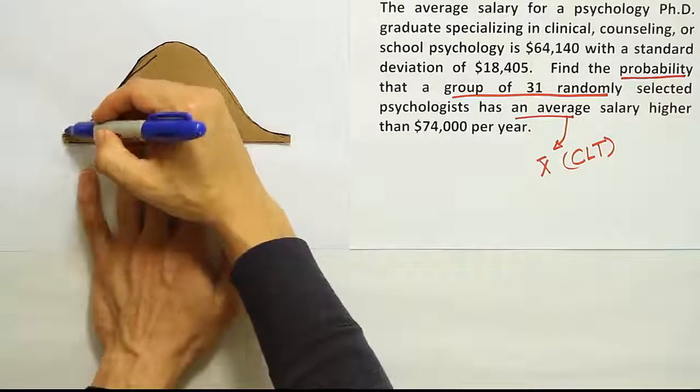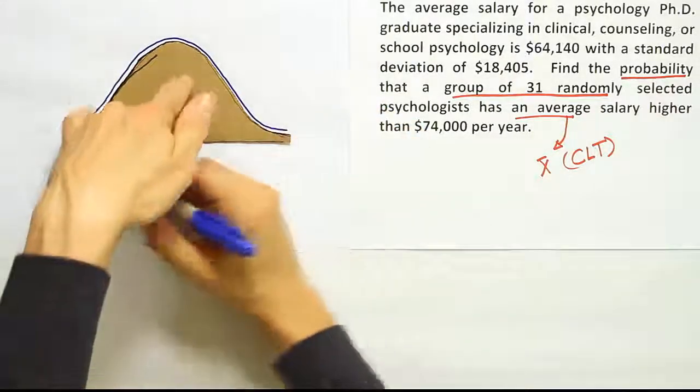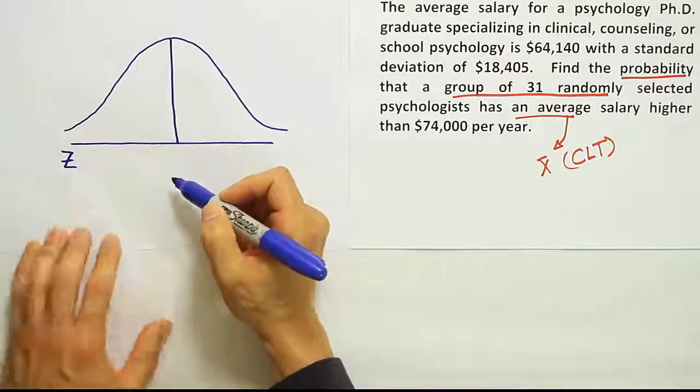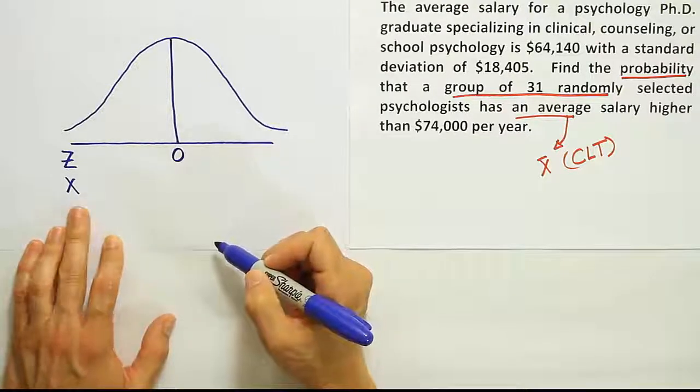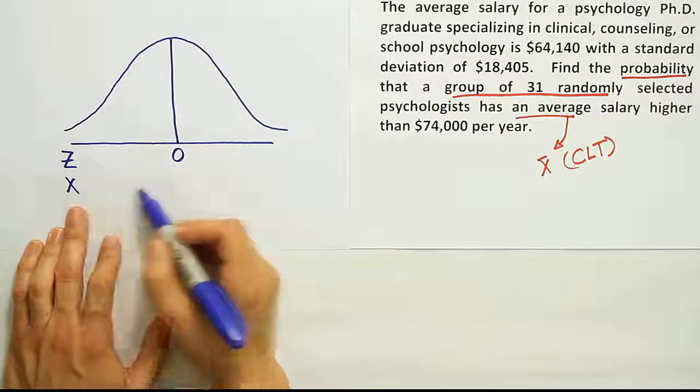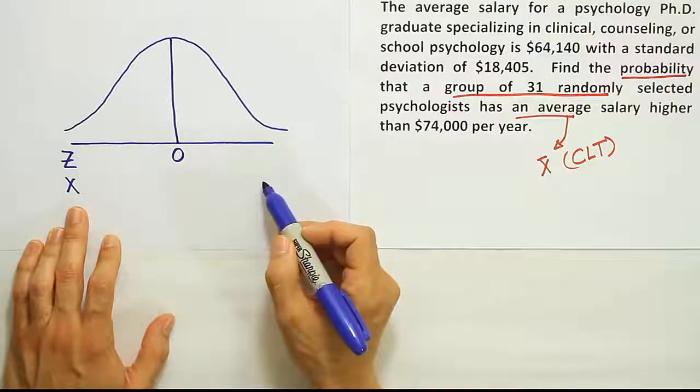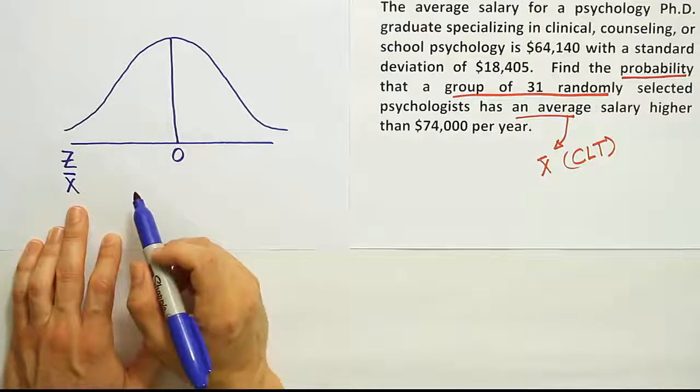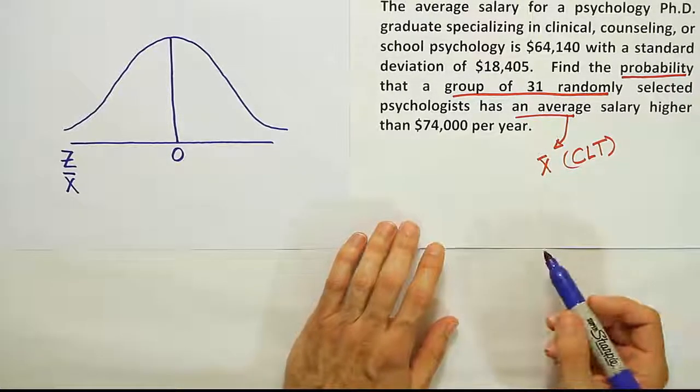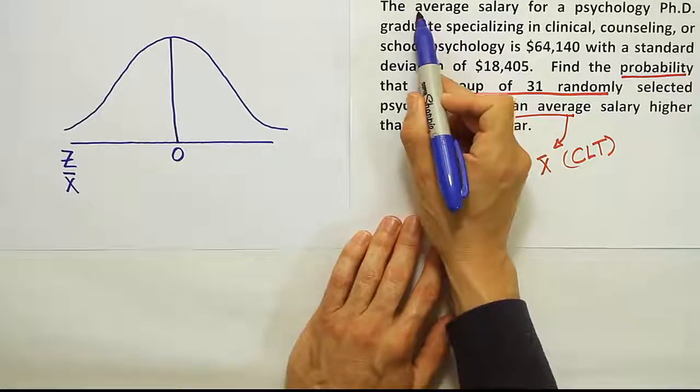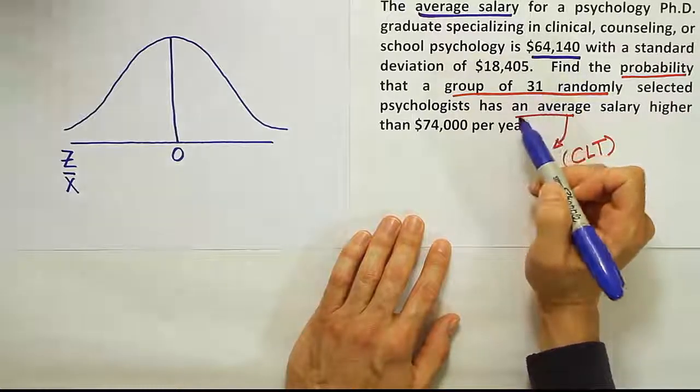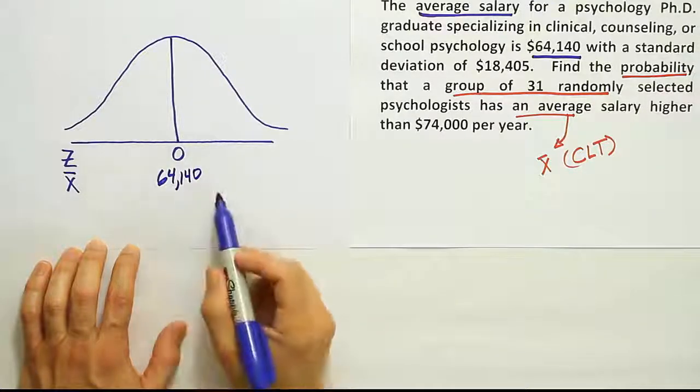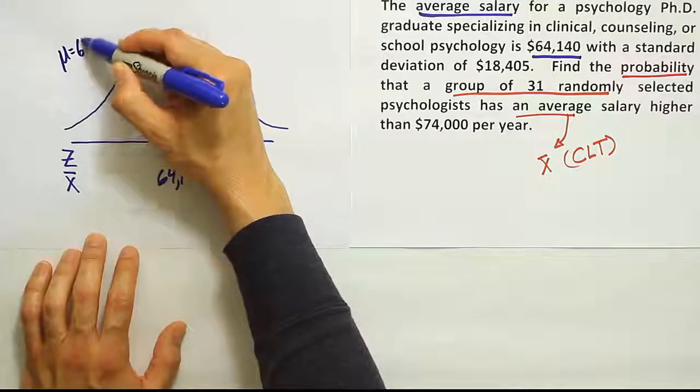So let's go ahead and use that then. I'll put my little bell curve tool up here, draw the bell curve. And let's go ahead and label the information from the problem. Remember, we normally have a Z axis and an X axis, right? Where the Z axis is centered at zero. We're not dealing with an X axis now though. That would be for an individual psychologist's salary. But here we're talking about the average X bar for a group of psychologists. So we need to put the mean here for X bar. Well, luckily the mean for X bar is the same as the mean of the X values. So the mean doesn't change. They tell us that the average salary is $64,140. Then that's the amount of money that we're going to put here in the bottom. So that's the average. So the mean here is $64,140.